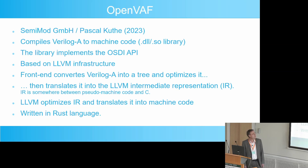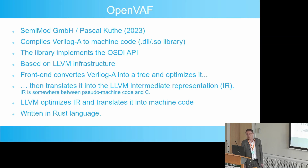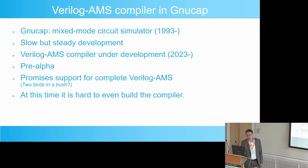The OpenVAF compiler converts the Verilog A model first into a tree, then optimizes it, and then generates the intermediate representation for the LLVM library. The compiler itself is written in the Rust language, which is a bit of a disadvantage because there are not so many competent Rust programmers as there are for C and C++. But otherwise, it implements a wider range of Verilog A functionality compared to ADMS.